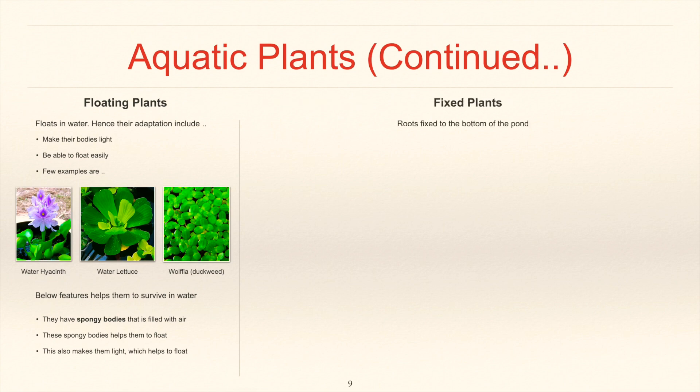Fixed plants are those whose roots are fixed to the bottom of the pond. They have adapted to be able to float, get enough air and sunlight to make food, avoid getting damaged by flowing water.